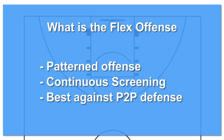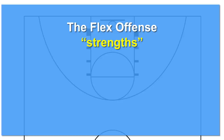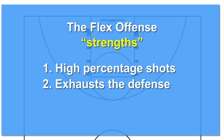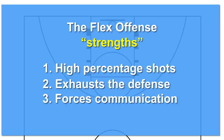The strengths of the flex offense include: one, high percentage shots — because of the constant screening action, easy scoring options typically open up as the defense breaks down. Two, you need a high level of cardiovascular conditioning to run the flex offense, so a poorly conditioned opponent will quickly tire against this offensive scheme. And three, the constant moving and screening will force the defense to have to communicate in order to defend against it.